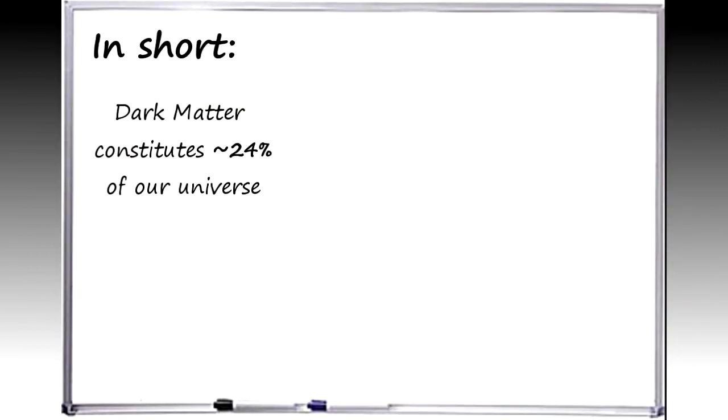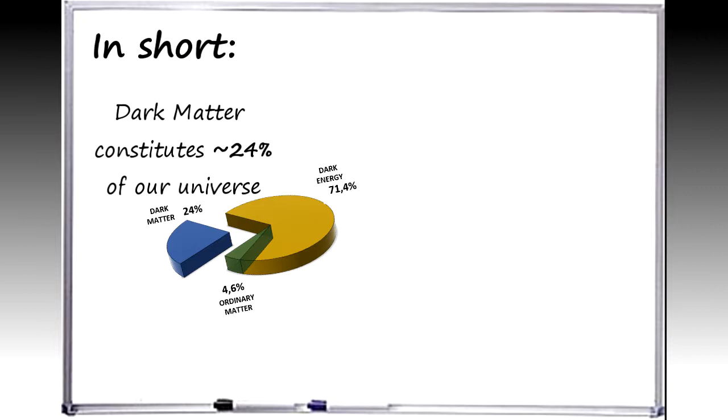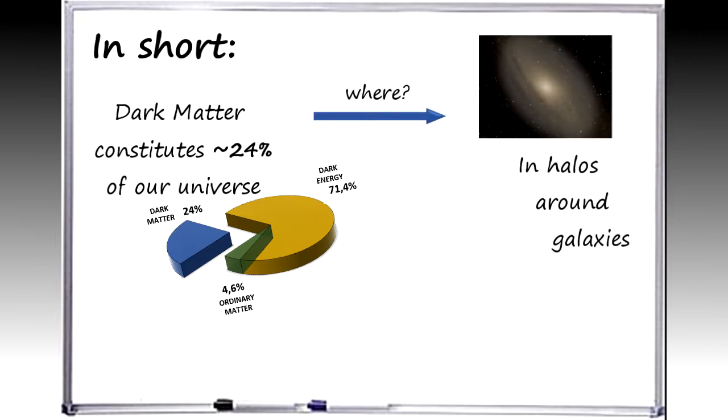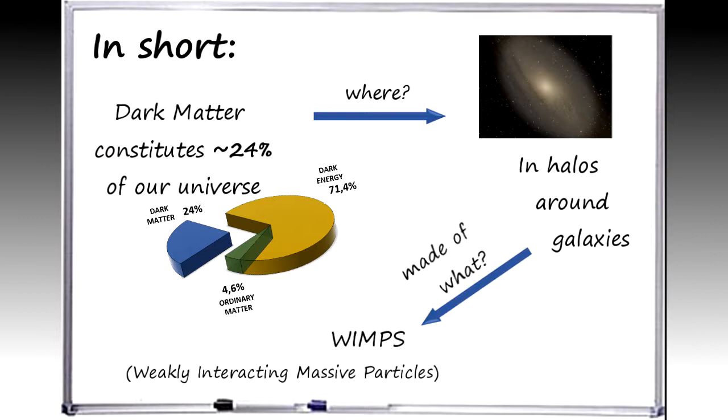In short, we know that dark matter exists and that it constitutes approximately 24% of our universe. We also know that it exists in halos around galaxies and that their most likely constituent, the WIMP, is very hard to detect.